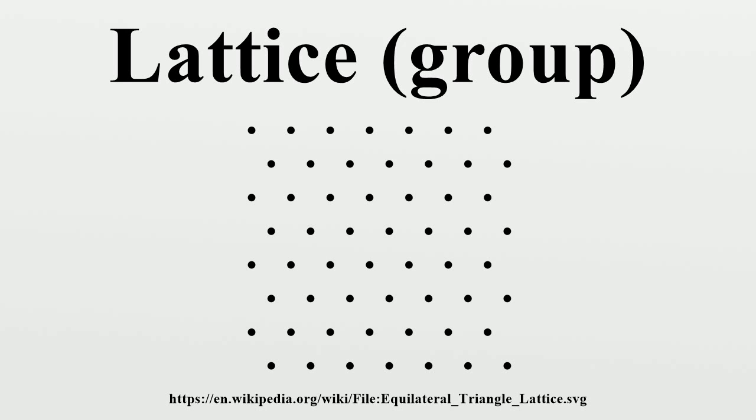A lattice in the sense of a three-dimensional array of regularly spaced points coinciding with, e.g., the atom or molecule positions in a crystal, or more generally, the orbit of a group action under translational symmetry, is a translate of the translation lattice, a coset.